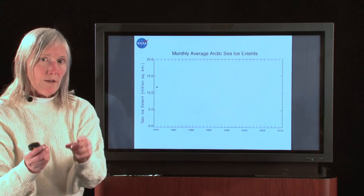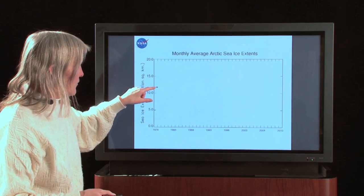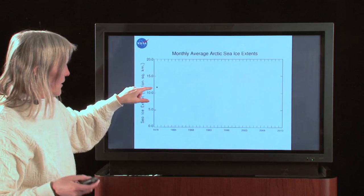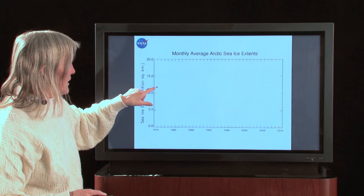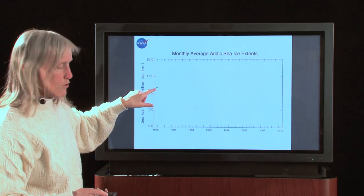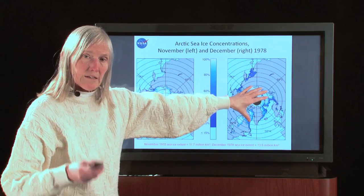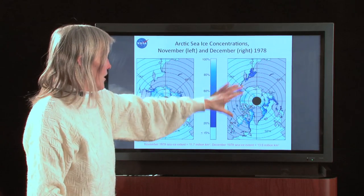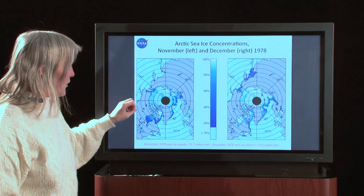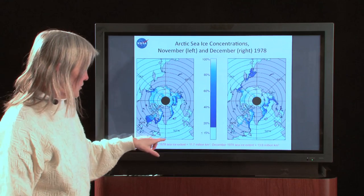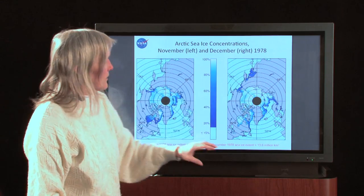So we take that point and plot it, and we're going to fill up this plot over time. We plot the first point for November of 1978, and then move on to December of 1978, doing month-by-month plots. The November picture is repeated here with its 11.7 million square kilometers result.